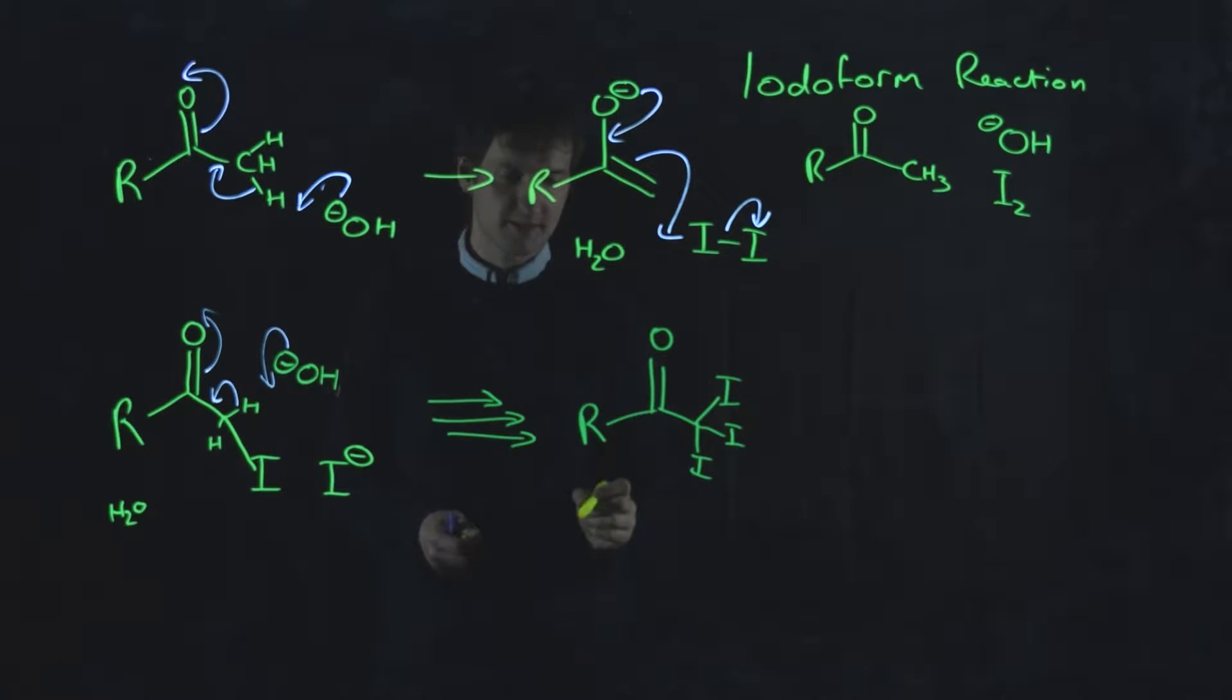Now, this molecule here doesn't have any protons, so it can no longer be deprotonated. It can no longer form an enolate. But this carbonyl is now attached to a carbon with three halogens, three electron withdrawing groups on it. So when it meets a hydroxide, which inevitably will, instead of deprotonating, it will attack and form a tetrahedral intermediate. And our tetrahedral intermediate is going to look something like this.